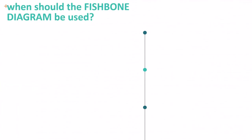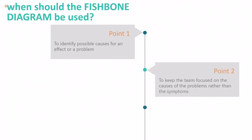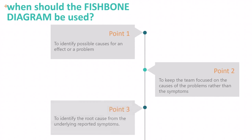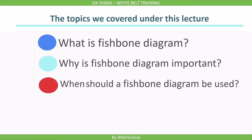The last question is: when should the fishbone diagram be used? After data related to your continuous process improvement action has been collected, we use this tool to identify possible causes for an effect or problem. We seek to keep the team focused on the causes of problems rather than the symptoms, and to identify the root cause from the underlying reported symptoms. In this lecture we addressed what is a fishbone diagram, why is the fishbone diagram important, and when should the fishbone diagram be used.